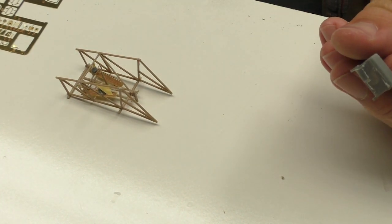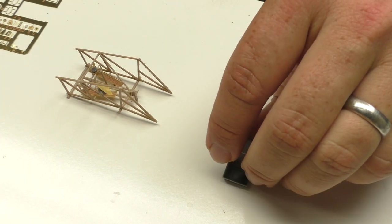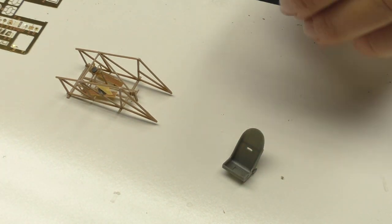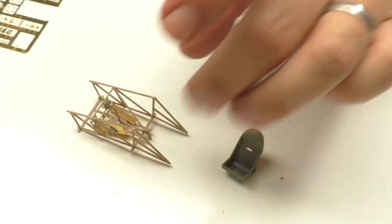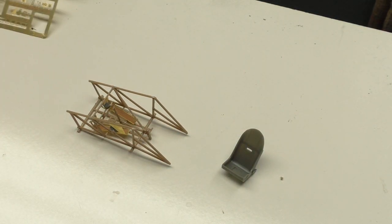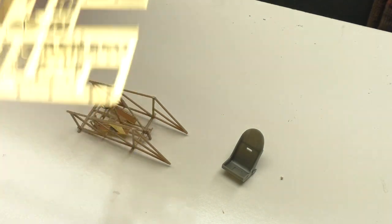Let's cut the resin seat off of its pour block here. Now we've got the cockpit coming right along. Now it's time to get into photo etch.